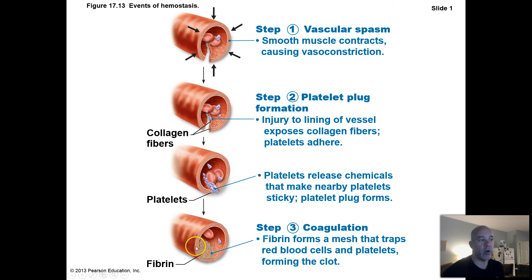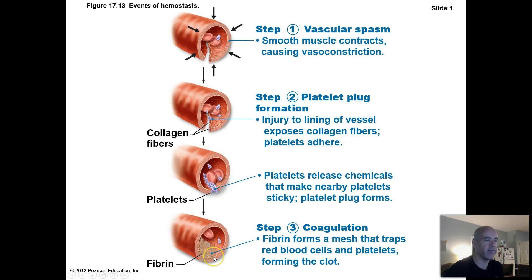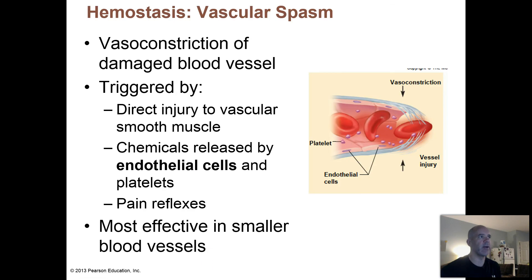To more permanently seal off that rip and allow more time for healing, coagulation gets triggered, where you form this mesh of fibrin proteins that traps red blood cells and platelets and more permanently seals off that injured area.